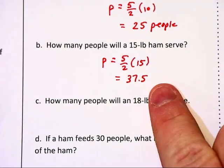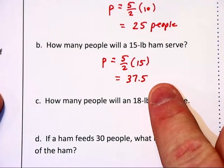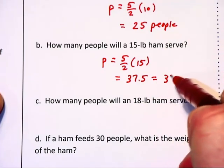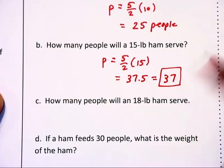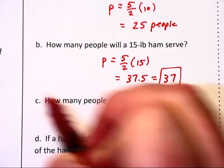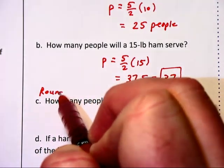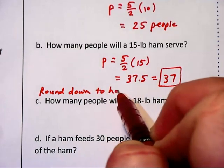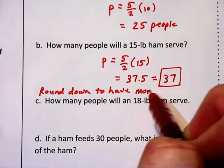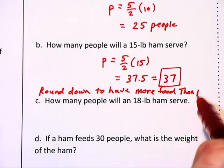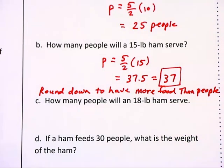Now you cannot serve a half of a person, and we have to choose whether to round up or down. In this case, we're going to round down to 37, and the reason here is we want to round down to have more food than people. If we throw that 38th person in, we may use up too much food, and not everybody will get enough.